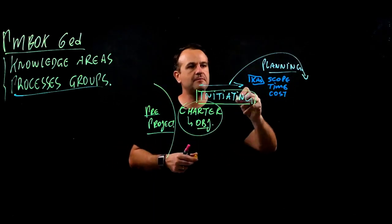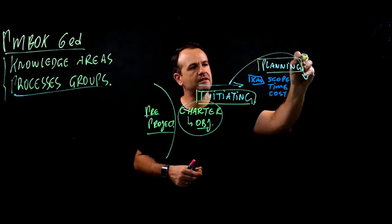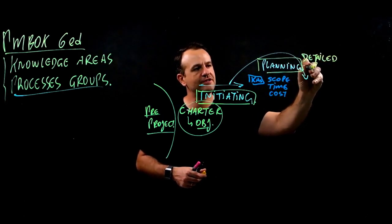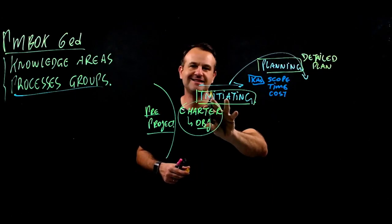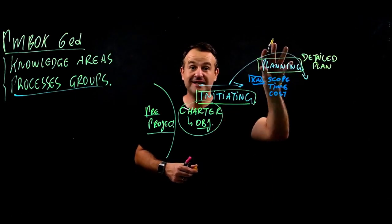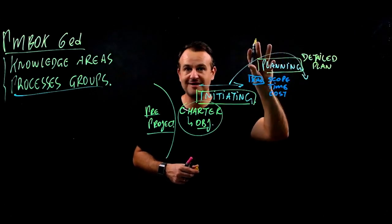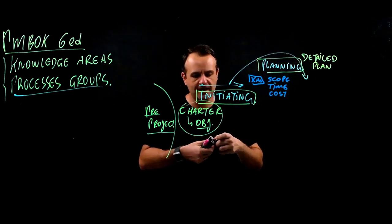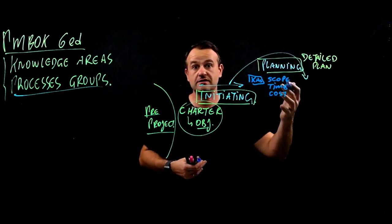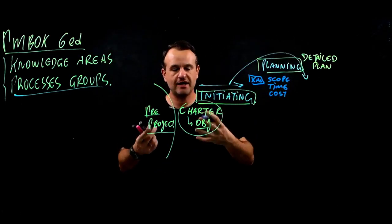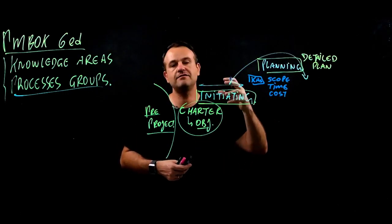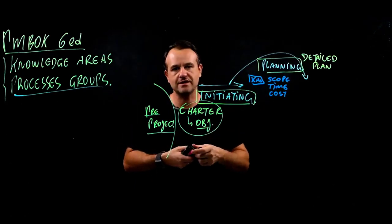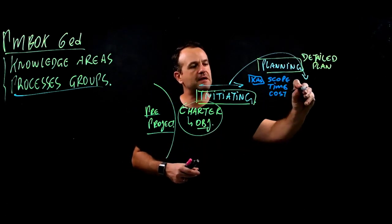In the planning we build a detailed plan and describe how we are going to achieve the objectives. We set the destination in initiating; in planning we create action plans, the route, the road map, so that we can achieve this future state. As you can imagine, planning can take lots of time — we need to gather requirements, define activities, sequence activities, plan for risks, resources, and all of that.